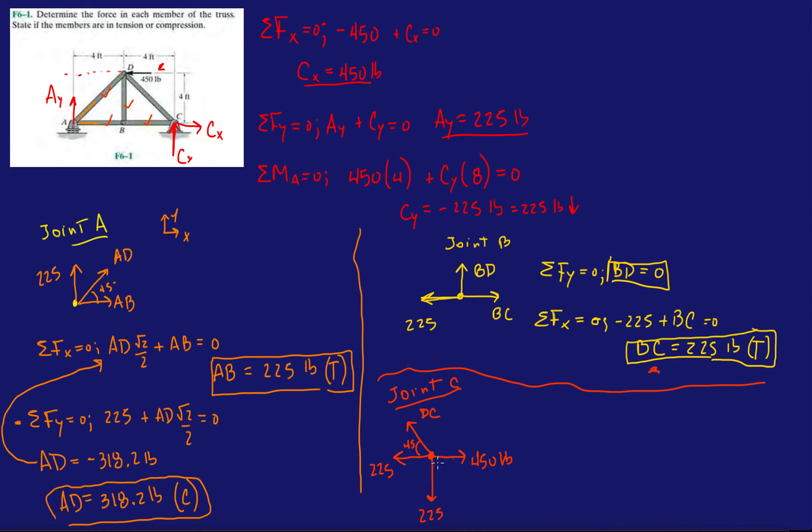So if I do it in the X, you know, I have three components. So I'm just going to say forces in the Y equals zero. And I'm going to have minus 225 over here. Plus the Y component of DC, which is going to be DC sine 45 equals zero. And then DC, I'm going to get back a positive answer. 225 divided by sine 45. And so that's positive 318.2 pounds. And because it's positive, I'm going to say that it is in tension.